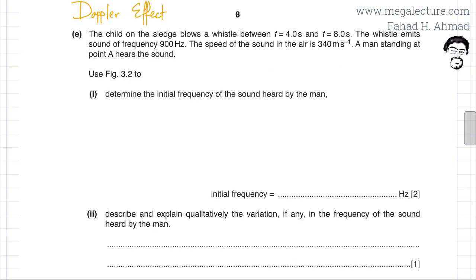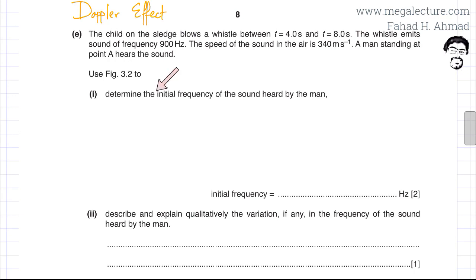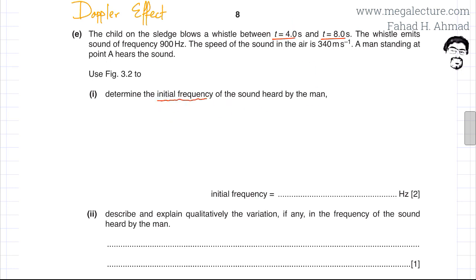The next part of the question is on the Doppler effect. The child on the sledge blows a whistle between t equals 4 and t equals 8 seconds. The whistle emits a sound of frequency 900 hertz. The speed of sound in air is 340 meters per second. A man standing at point A hears the sound. We need to determine the initial frequency of the sound heard by the man, so we need the velocity at t equals 4 seconds.